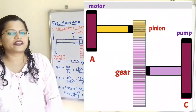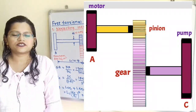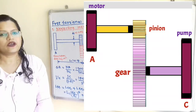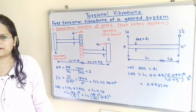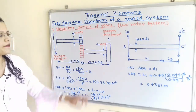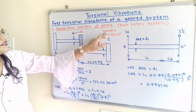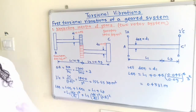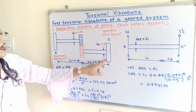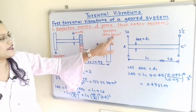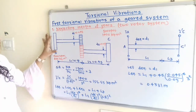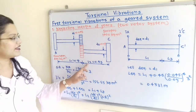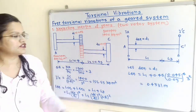Let us understand the given data with the help of a diagram. The electric motor is rotor A and the pump is rotor C. Na = 1500 rpm, Nc = 500 rpm. The mass moment of inertia for the motor is Ia = 400 kg·m² and for the pump Ic = 1400 kg·m². The motor shaft has length L1 = 0.18 m and diameter D1 = 0.045 m. The pump shaft has length L2 = 0.45 m and diameter D2 = 0.09 m.